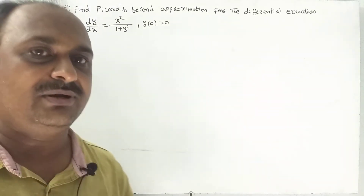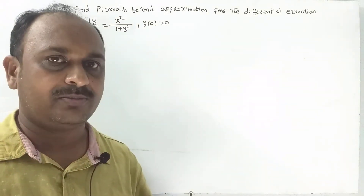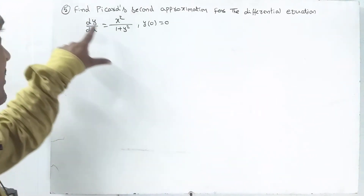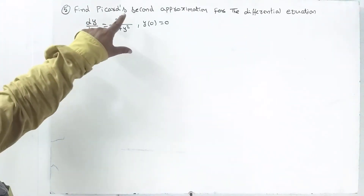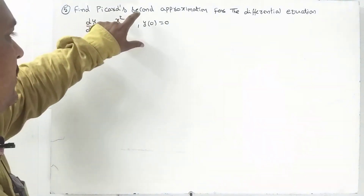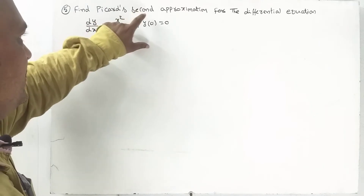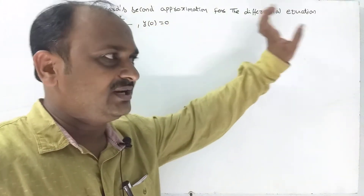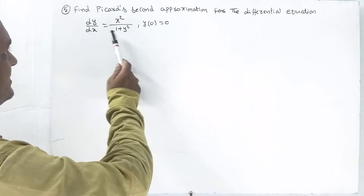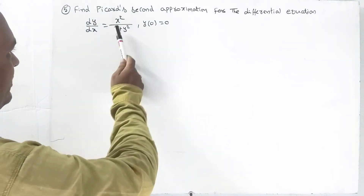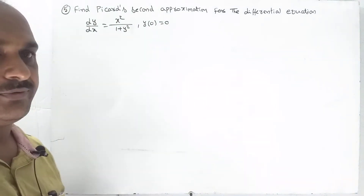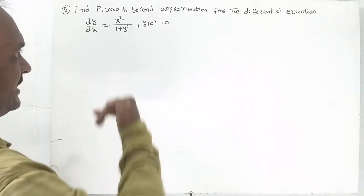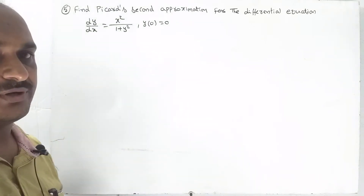Okay, last class for problems, this is the fifth one. What is the fifth problem? Find Picard's second approximation for the differential equation dy/dx equals x squared by 1 plus y squared, y of 0 equal to 0. And that means find Picard's second approximation.